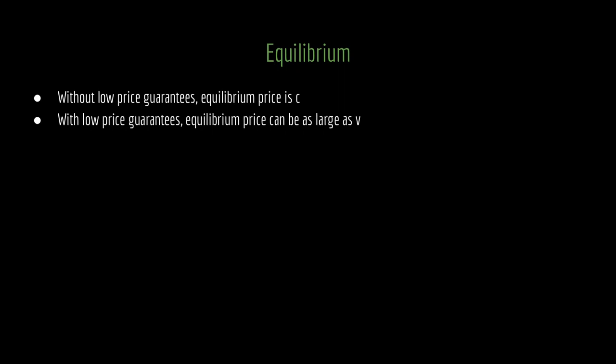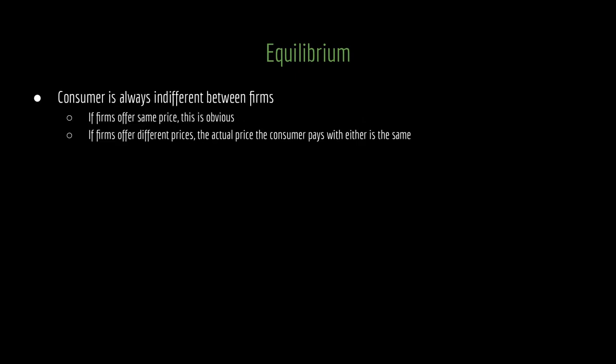What we're going to observe with low price guarantees is that the equilibrium price can be as large as the consumer's reservation value V. That means the consumer is really poorly off — they are doing no better than if no trade had transpired. And all of that surplus is going to the firms. Let's think about why these low price guarantees can actually backfire on the consumer.